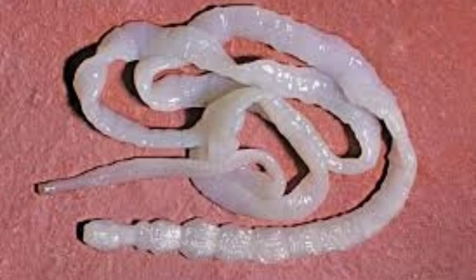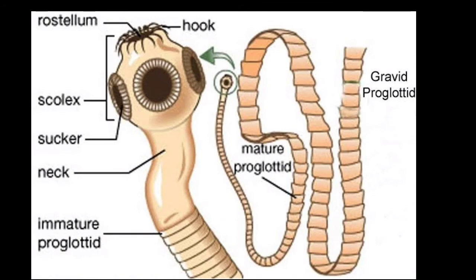For their parasitic mode of life, Platyhelminthes have suckers and hooks. The suckers are used to suck nutrients from the host's body, and the hooks help them attach to the host. For example, in the diagram you can see the suckers present on the organism and the hooks used to attach to the intestine.